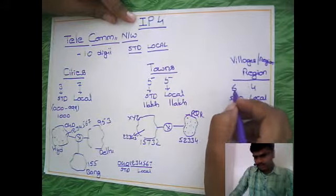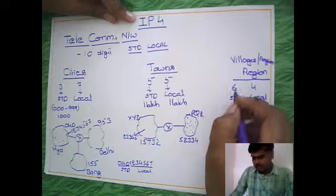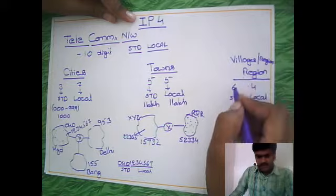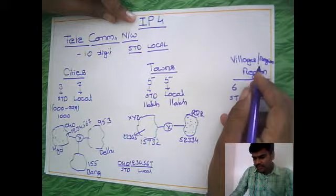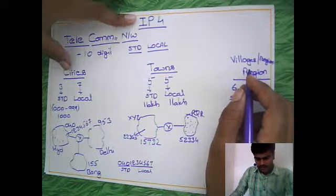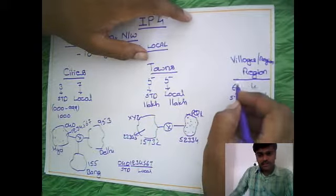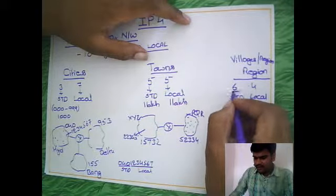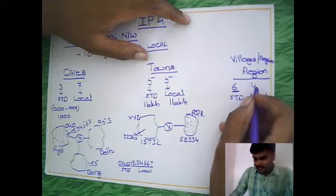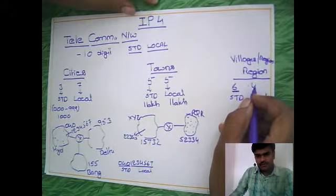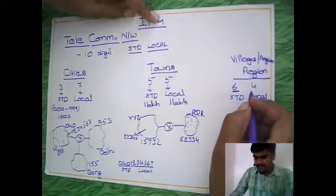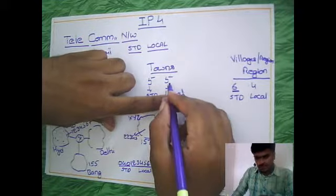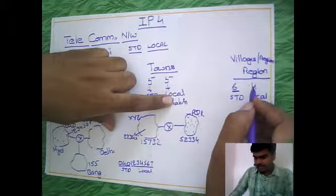This kind of discussion is important when you go for Internet Protocol version 4 (IPv4). Villages are more numerous compared to cities or towns, so you need a bigger number to represent all the villages — that's why 6 digits are given for the STD part. But in each village you have fewer connections compared to towns, so in the local part here you have one digit more and there one digit less.